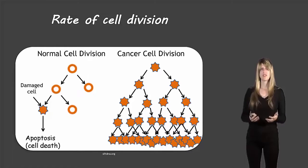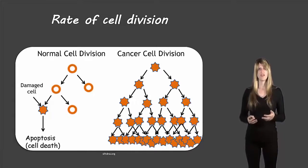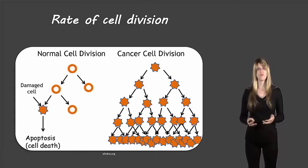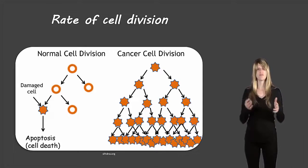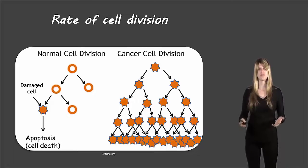If a cell becomes damaged it goes through something called apoptosis, or programmed cell death. When a cell hits a cell cycle checkpoint and realizes there's some sort of problem, if it cannot fix that problem then it kills itself — that's apoptosis. In the case of cancer, the cells divide much more quickly and when there is a mistake the cell does not die; it just continues to reproduce and reproduce.